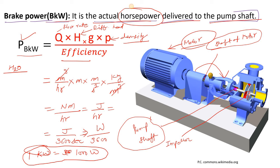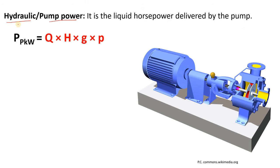That's how you calculate brake power. Now, notice that brake power is the actual horsepower delivered to the pump shaft — this means it is the input power, because you are giving power to the pump shaft.